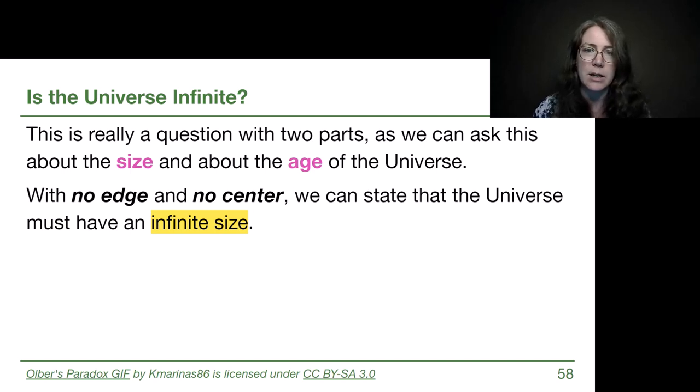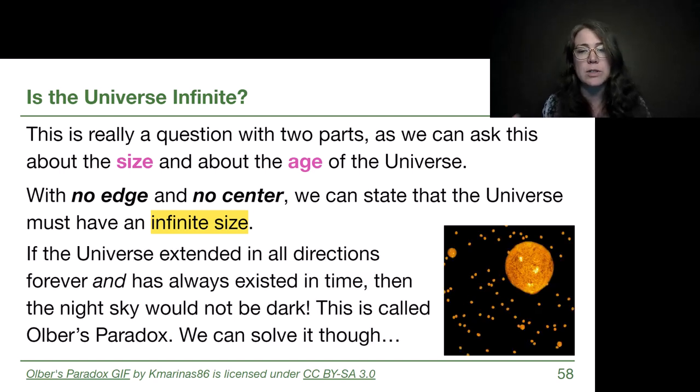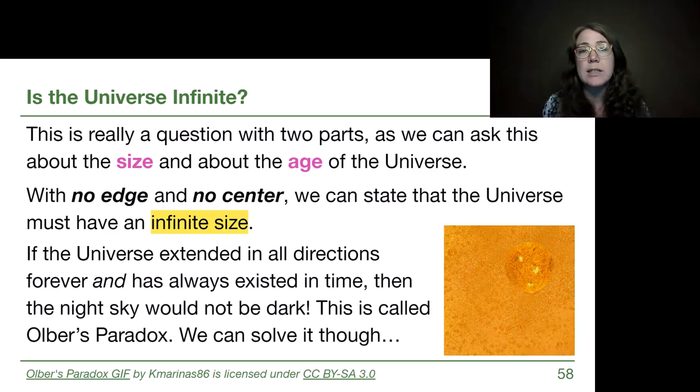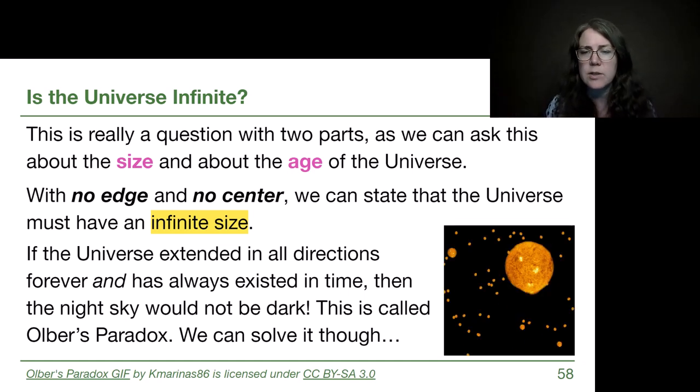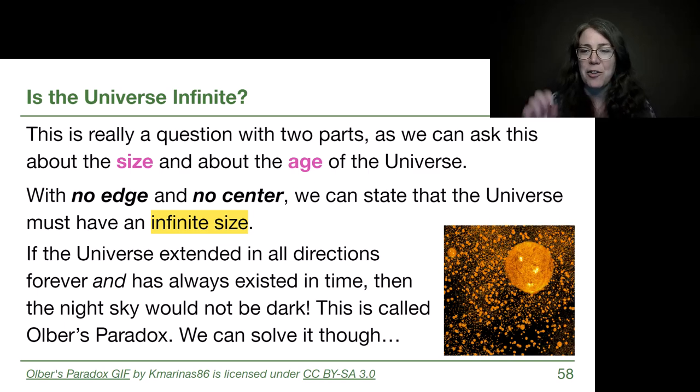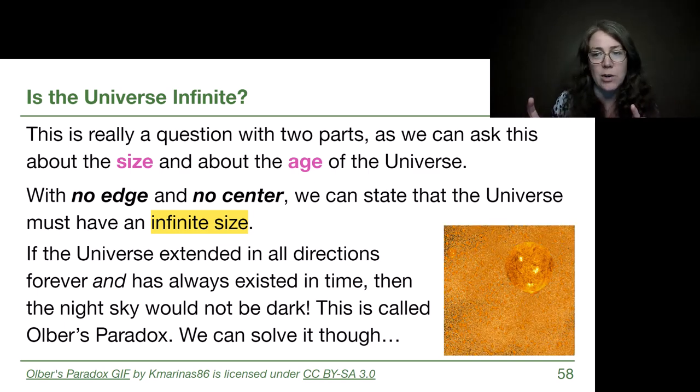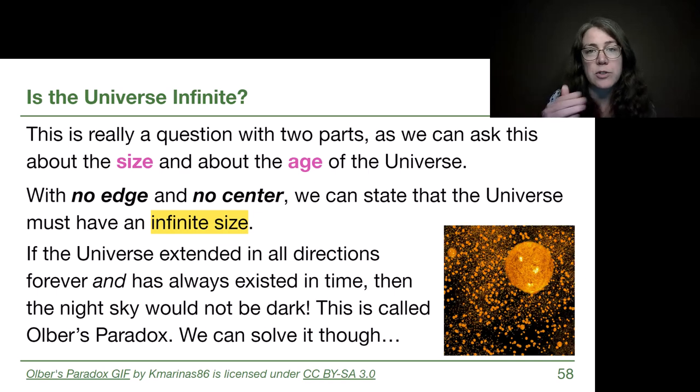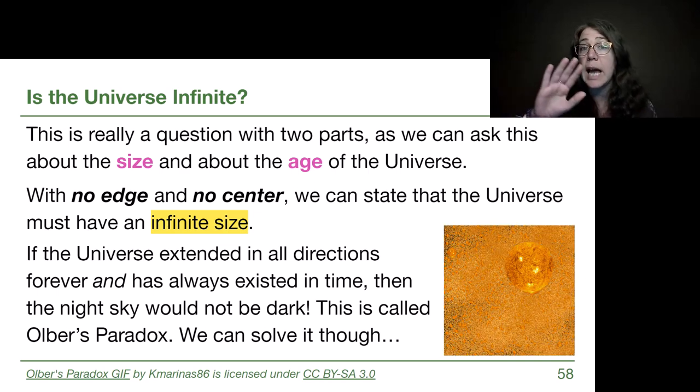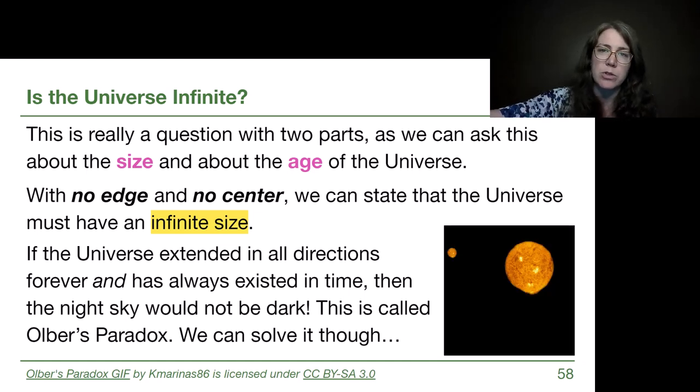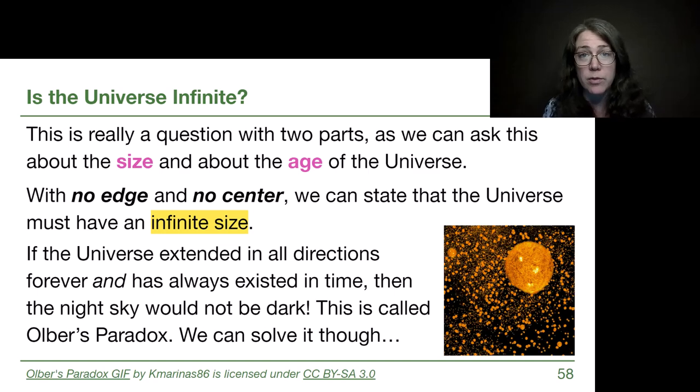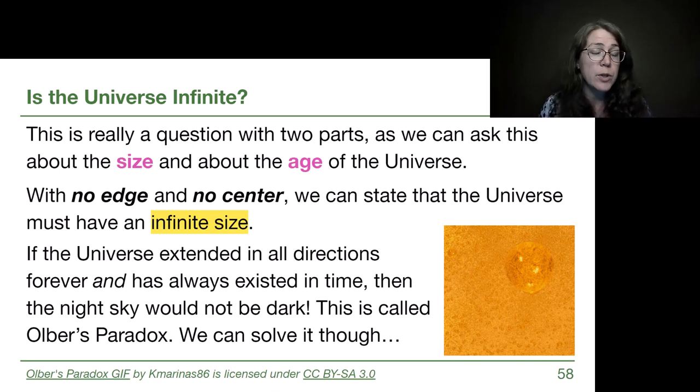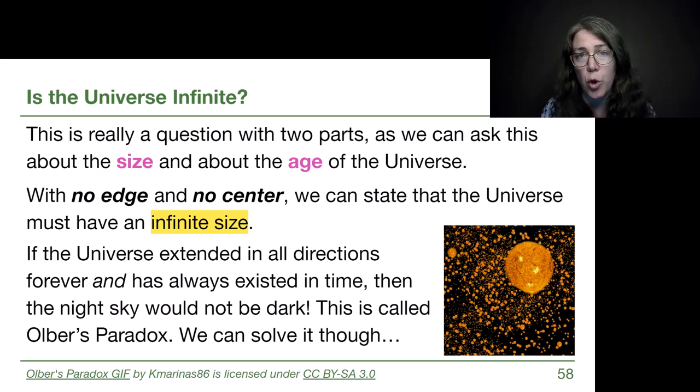So now let's talk about the idea of the age. If the universe extended in all directions and has always existed in that infinite size, then the night sky wouldn't be able to be dark. This simple little animation here is kind of populating the space of a patch of sky with stars. But if the universe has always existed, then any single direction you look, no matter how far away those stars would be, you'd find stars and it would populate that part of the sky with light. So the fact that our night sky is dark can't work if the universe is infinite in both size and age. And this is referred to as Olber's paradox.